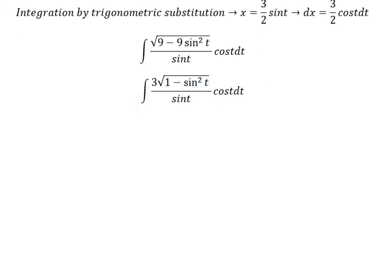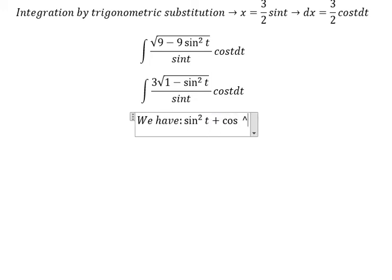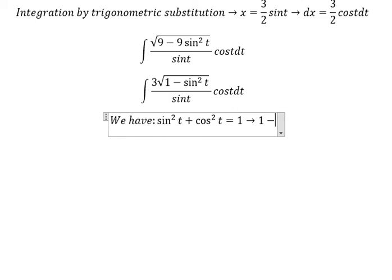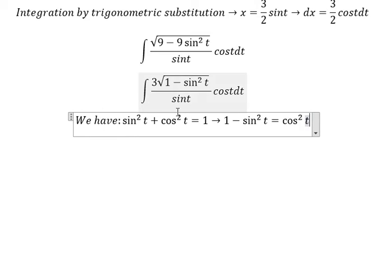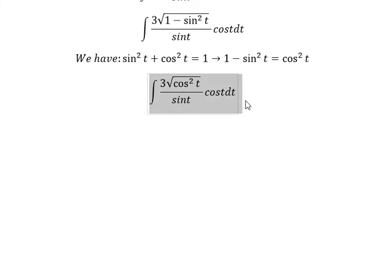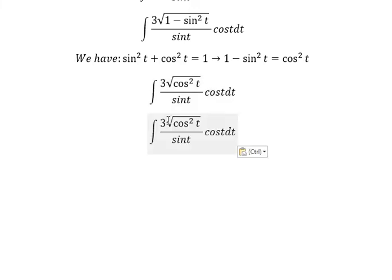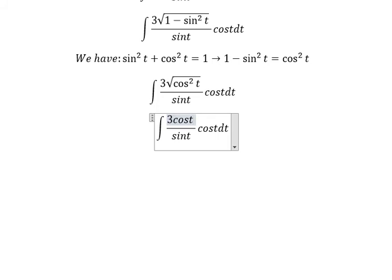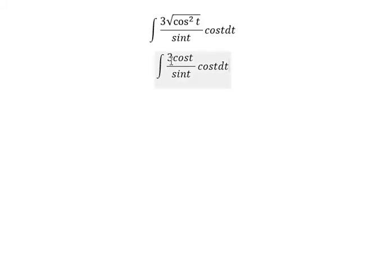We have sin²(t) plus cos²(t) equal to 1, so 1 minus sin²(t) equals cos²(t). We substitute 1 minus sin²(t) with cos²(t) and put it in here. The square root of cos²(t) gives us cos(t). We put the 3 outside, so we have cos(t) multiplied with cos(t).